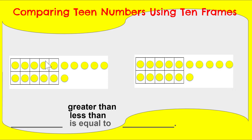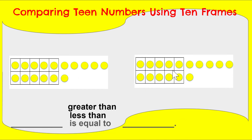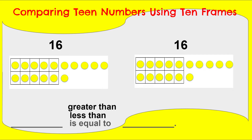I have 10 here. I'm going to count on: 11, 12, 13, 14, 15, 16. I have 16 in this group. And again over here I have 10 — very good, because it's all filled — and then count on: 11, 12, 13, 14, 15, 16. So I have 16 in this group and 16 in the other group.